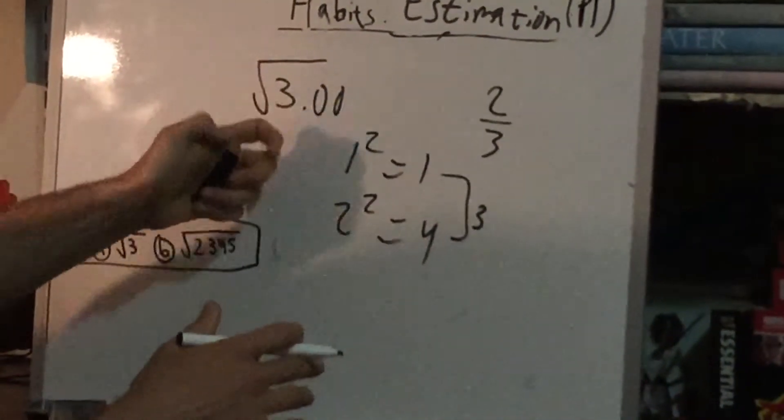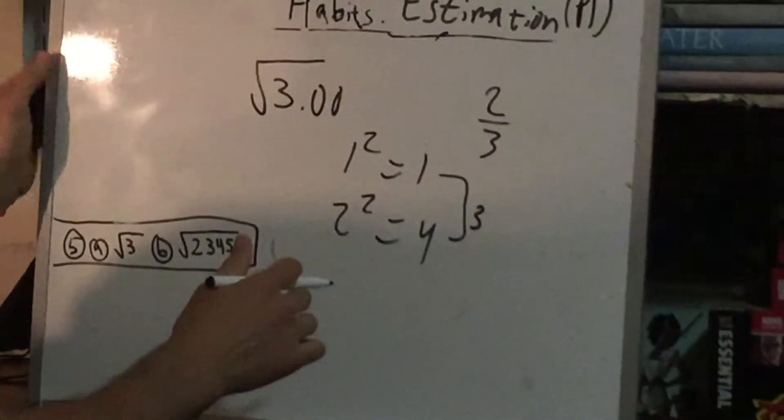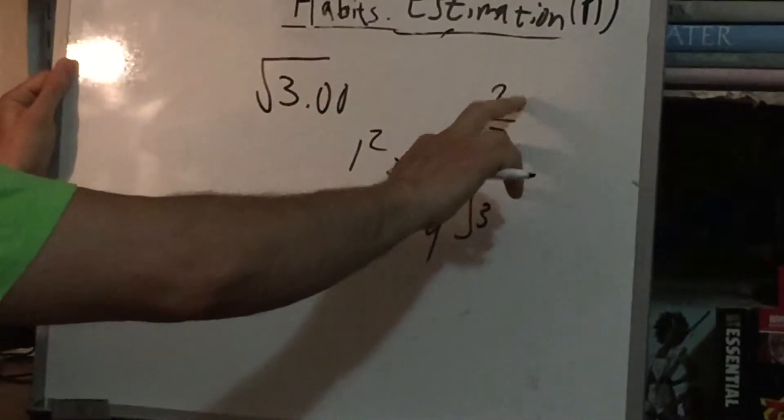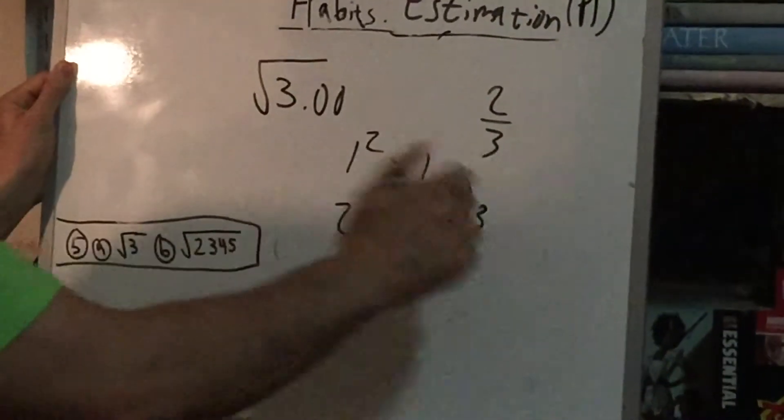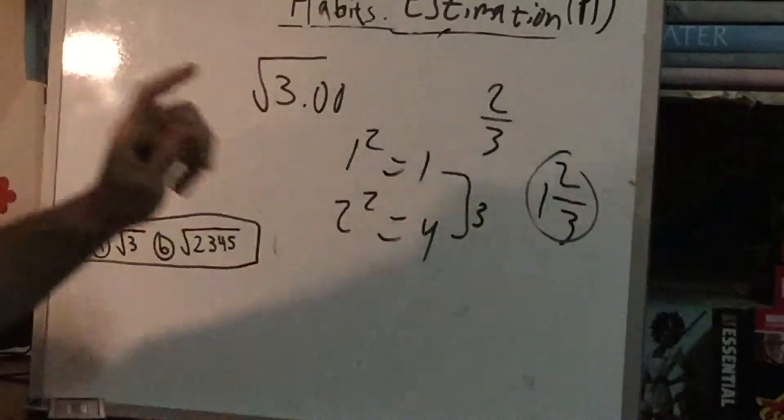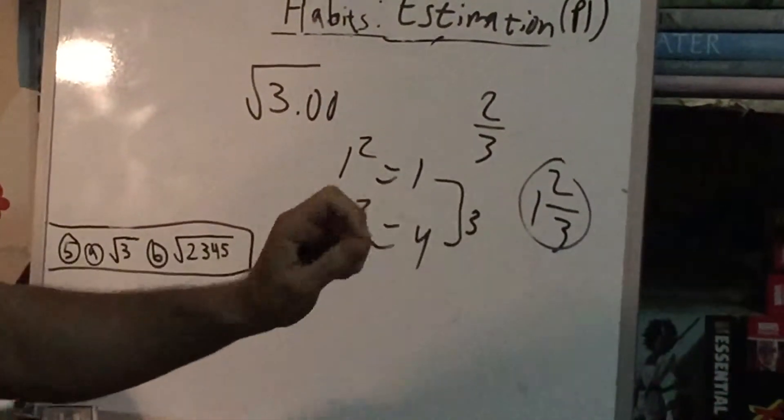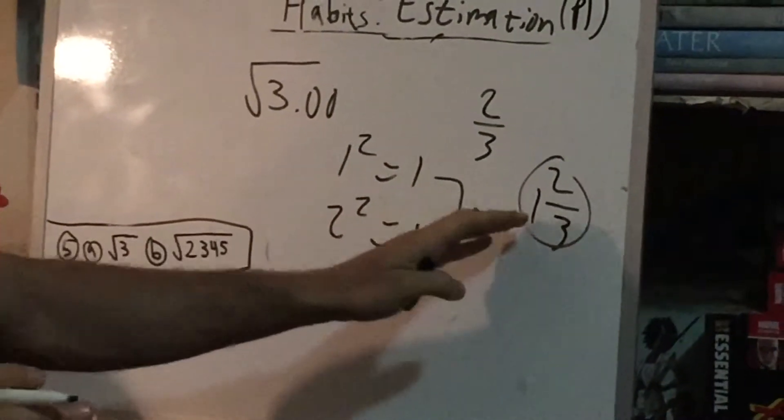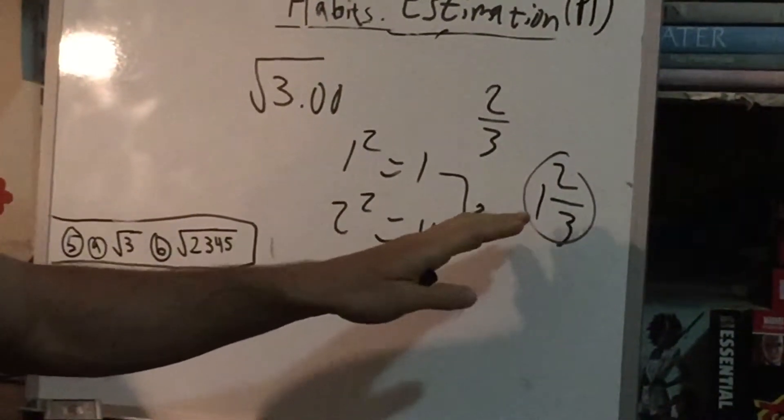So we might say, since that's the case, let's try taking a number that's 2 thirds of the way from 1 to 2. So we might try 1 and 2 thirds. Now, I want to go into, it's going to be a little bit involved, but hang in there. There's a reason why this is going to be a decent guess, but it's not going to be accurate.